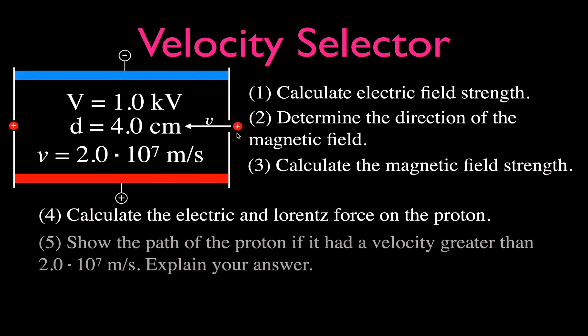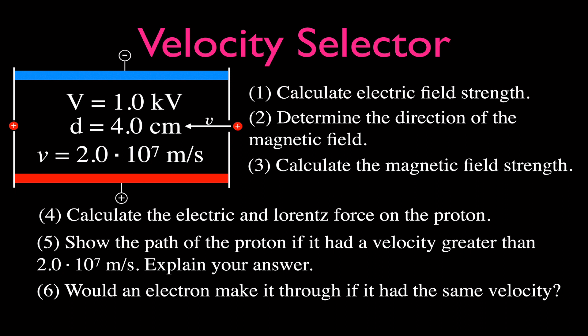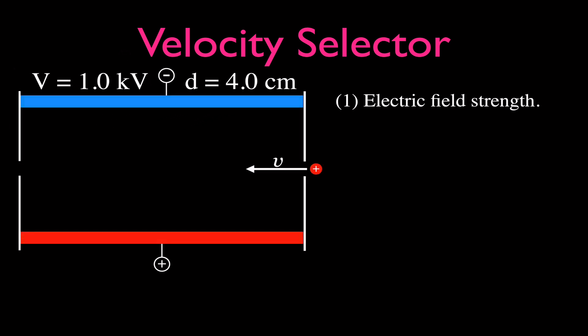In this video we're going to calculate the electric field strength, determine the direction of the magnetic field, calculate the magnetic field strength, calculate the force from the electric field and the magnetic field on that proton, show the path of the proton if it had a velocity greater than 2.0 times 10 to the 7 meters per second, and see if an electron with the same velocity in the same fields would travel straight through.